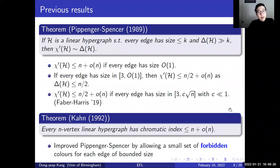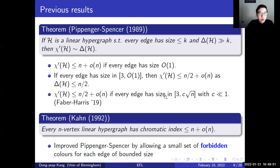Finally, in 1992, Kahn was able to show that the asymptotic version of the EFL conjecture is true, such that every n-vertex linear hypergraph has chromatic index at most n plus o(n). In fact, he improved the Pippenger-Spencer result by allowing a small set of forbidden colors for each edge of bounded size to prove this result.